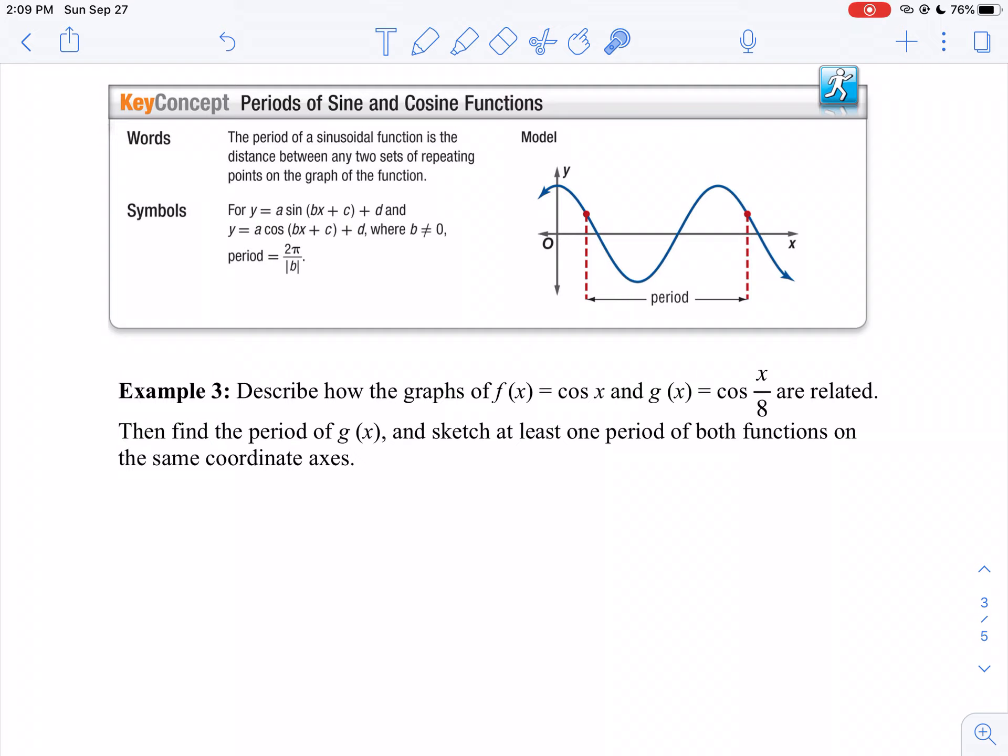So in this example, I want to describe how the graph of f(x) equals cosine x and g(x) equals cosine x over 8 are related. I want to find the period of g(x) and sketch at least one period of both functions on the coordinate axis.